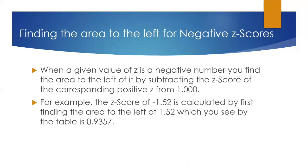For example, the z-score of -1.52 is calculated by first finding the area to the left of z, which you can see by the table is 0.9357. Then we subtract that from 1 to get the area to the left of z equals -1.52, and as you can see, that is equal to 0.0643 or 6.43%.